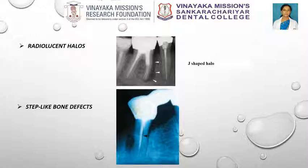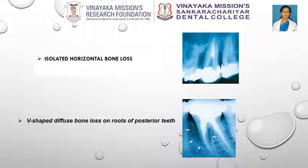Step-like bone defects: when the fracture runs obliquely across the root or where the fracture does not extend into the apical portion, a characteristic step-like bone defect develops. Isolated horizontal bone loss: when only an isolated tooth shows bilateral horizontal bone loss, the presence of a mesial-distal root fracture should be expected, particularly in the presence of apparently successful endodontic therapy and where the overall periodontal situation is stable. V-shaped diffuse bone loss on roots of posterior teeth: when the buccal roots of maxillary or mandibular molars are vertically fractured, the characteristic radiographic image is a diffuse V-shaped radiolucency, widest at the crestal bone and narrowing towards the apex.